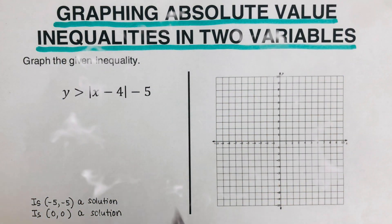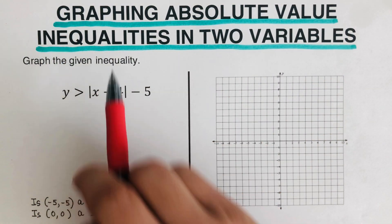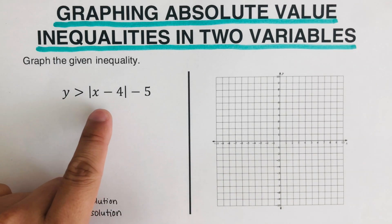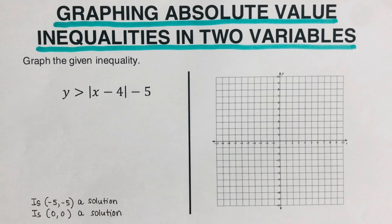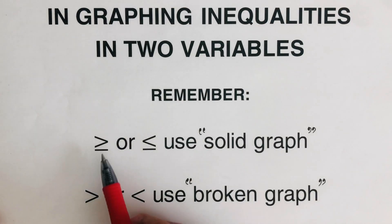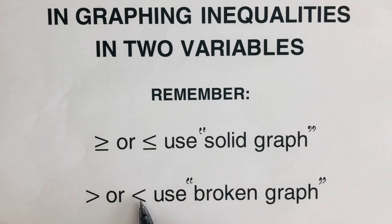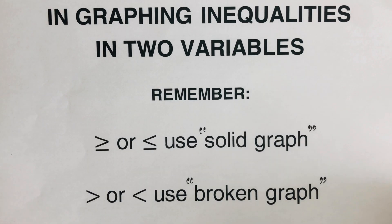Hello everyone. In this video we will be graphing absolute value inequalities in two variables. This is called a two-variable inequality because you have both x and y as part of the inequality. Before we go into the examples, let's review graphing inequalities in two variables. If we have greater than or equal to, or less than or equal to, we use the solid graph. If we have greater than or less than, we use the broken graph.